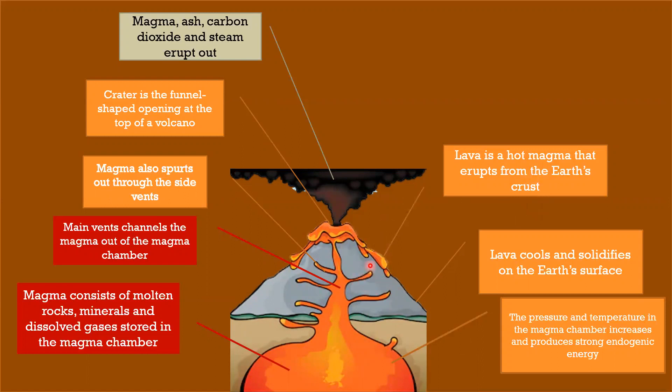The lava cools and solidifies on the Earth's surface. The pressure and temperature in the magma chamber increases and produces strong endogenic energy.